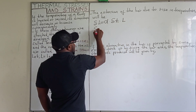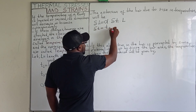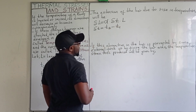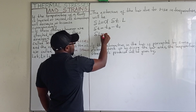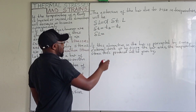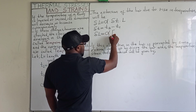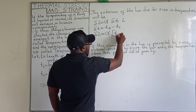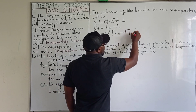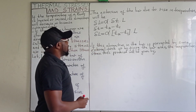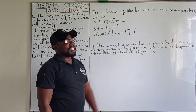This change in temperature is given by the final temperature minus the initial temperature, which results in the change in length of the extension of the bar being equal to the coefficient of linear expansion multiplied by the change in temperature T2 minus T1, multiplied by the length of the bar. Therefore, that is the change in length of the extension of the bar due to rise in temperature.